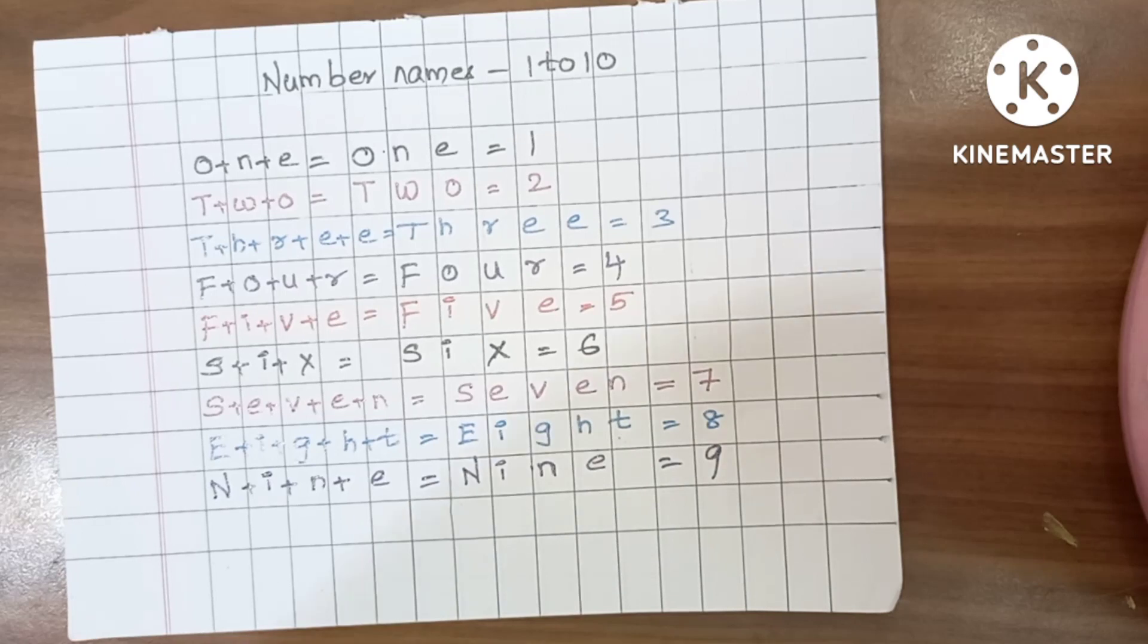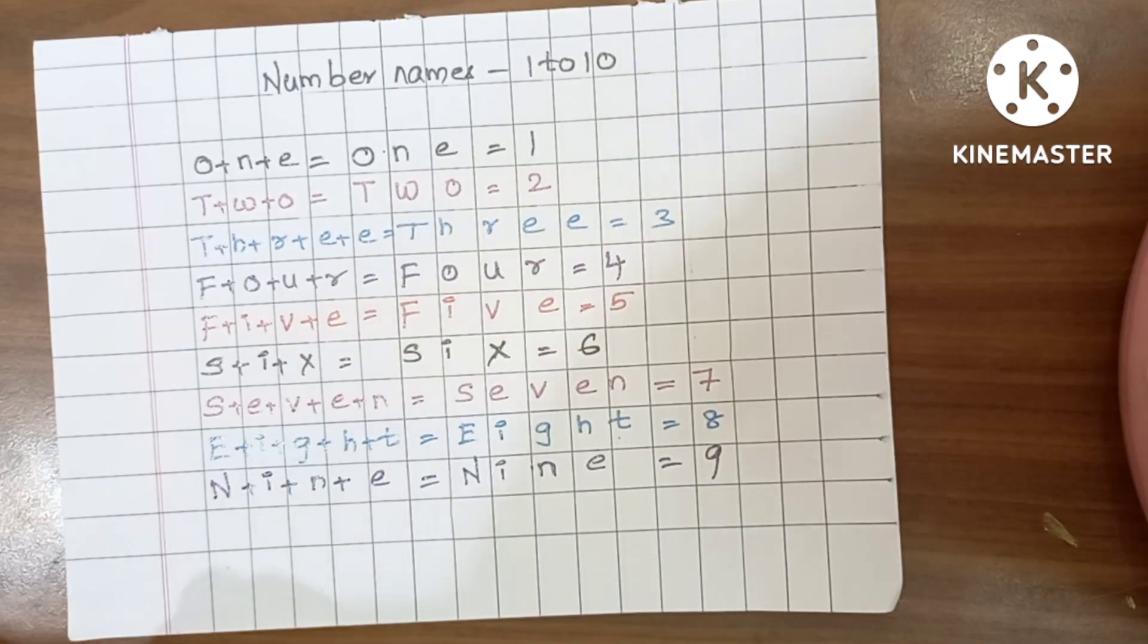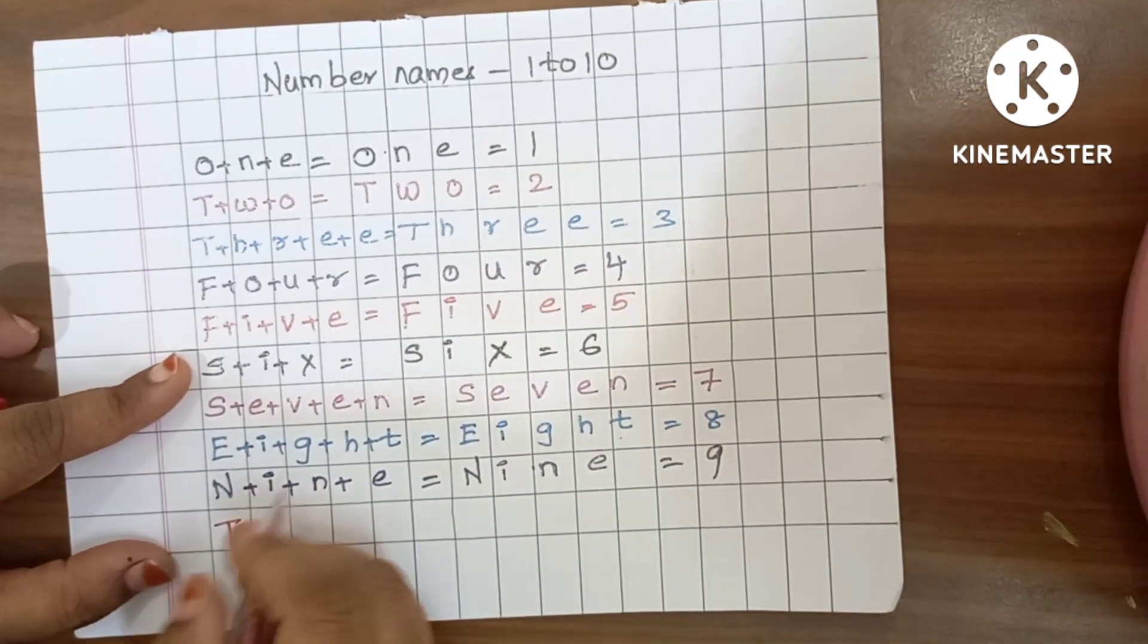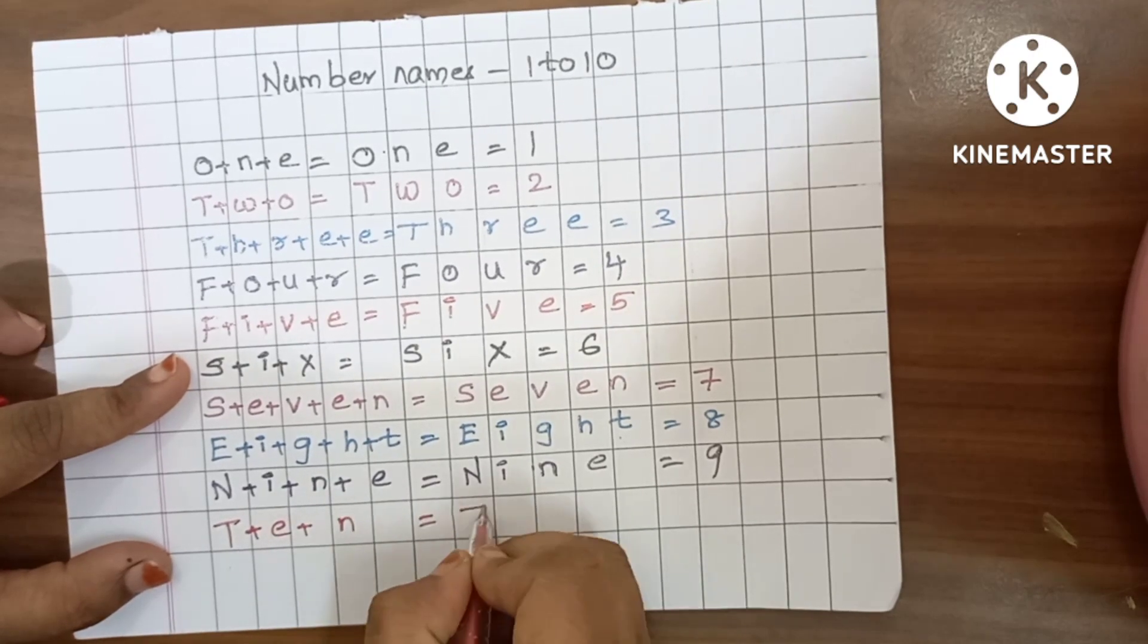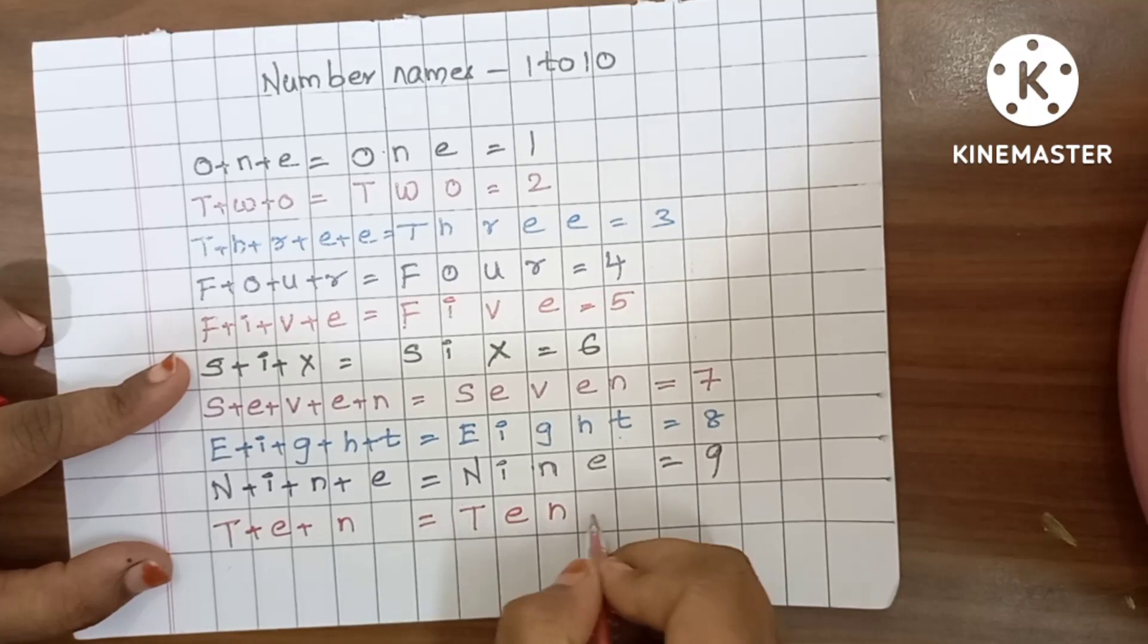Red color. T plus E plus N is equals to T, E, N, 10.